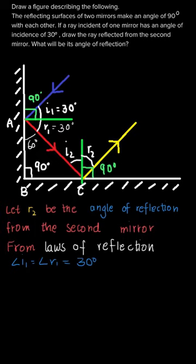Since the normal is perpendicular, the full angle is 90 degrees. With r1 equal to 30 degrees, the remaining angle is 90 minus 30, which equals 60 degrees. Now looking at triangle BAC, one angle is 90 degrees and another is 60 degrees. Using the angle sum property, the sum of all angles of a triangle is 180 degrees.